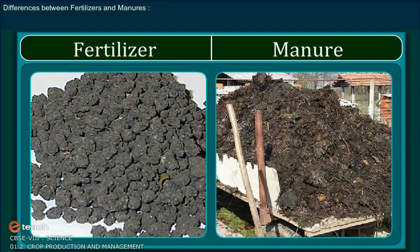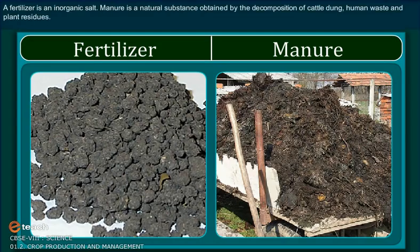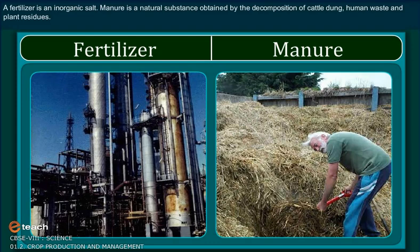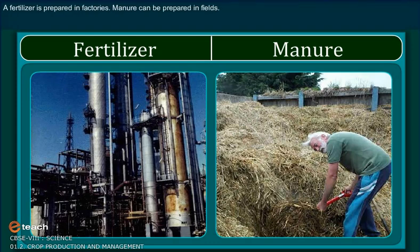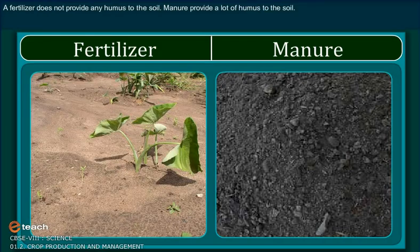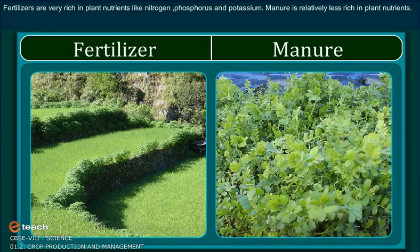Difference between fertilizers and manure. A fertilizer is an inorganic salt. Manure is a natural substance obtained by the decomposition of cattle dung, human waste and plant residues. A fertilizer is prepared in factories, while manure can be prepared in the fields. A fertilizer does not provide any humus to the soil, whereas manure provides a lot of humus to the soil. Fertilizers are very rich in plant nutrients like nitrogen, phosphorus and potassium. Manure is relatively less rich in plant nutrients.